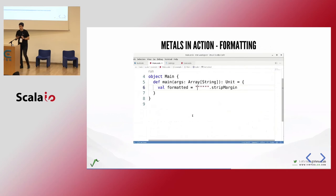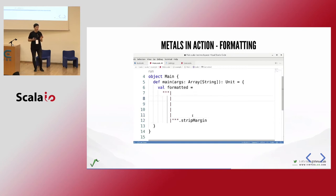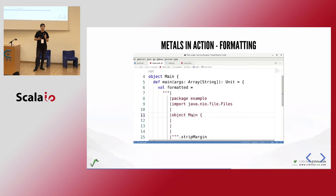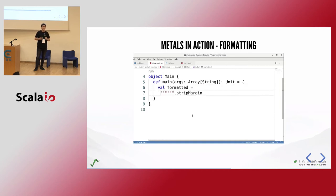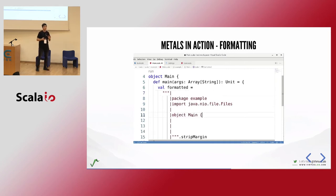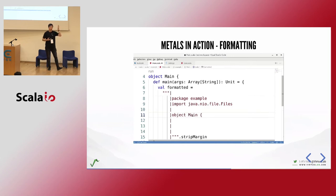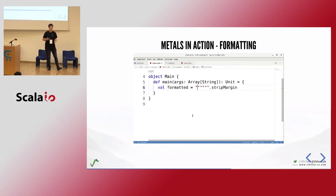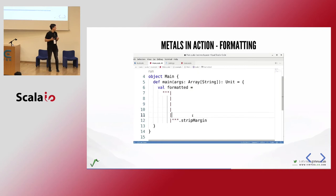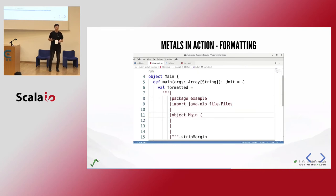We also have formatting. We use ScalaFMT for basic file formatting. LSP provides two formatting types: on-type formatting — for example, when you hit Enter inside a formatted string, we automatically add pipe characters. There's also range formatting, which is basically on-paste formatting: whenever you paste anything, you can format that part, and we add pipes on paste too. It's very similar to how IntelliJ does this, and we didn't want to reinvent the wheel.